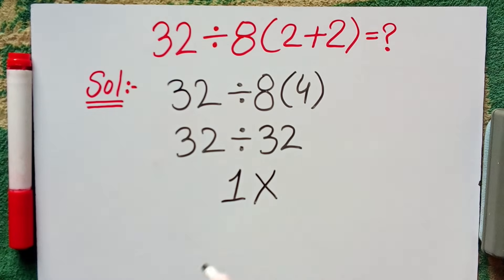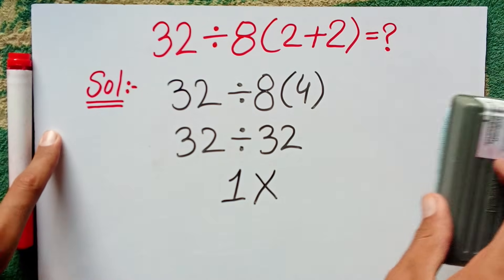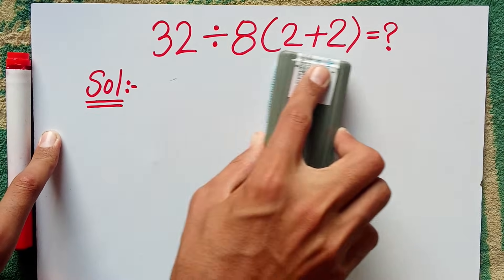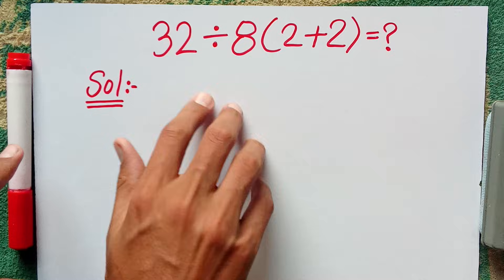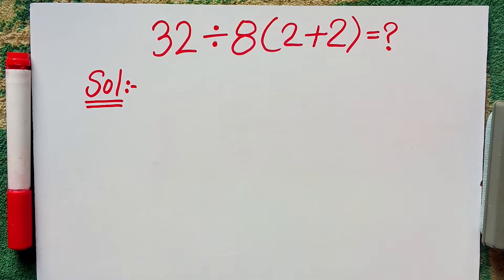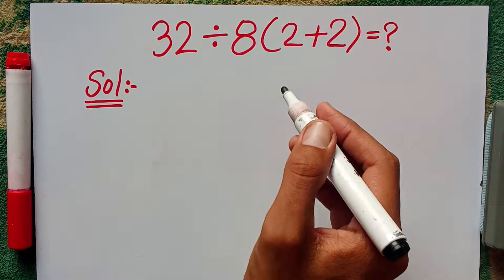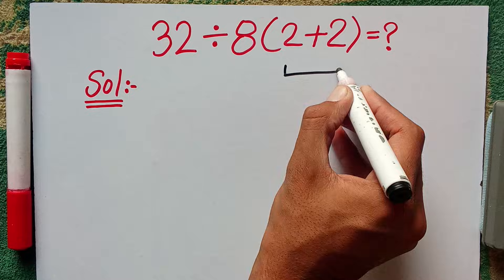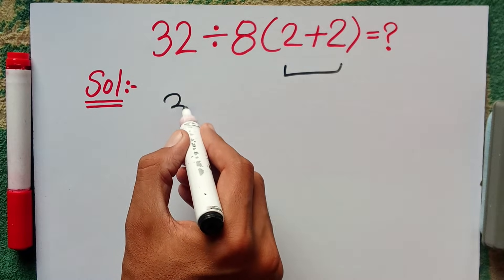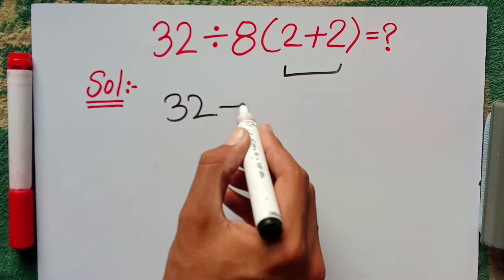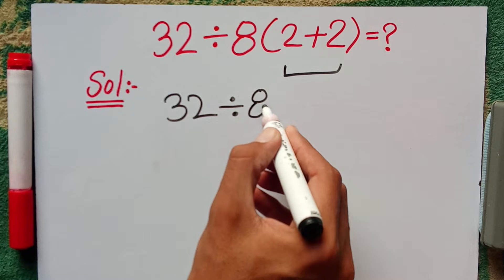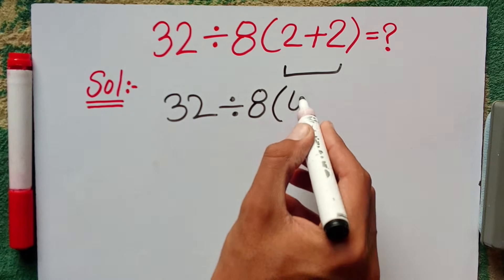But guys, this answer is wrong because the order of operation which is called PEMDAS rule says that whenever an expression has parenthesis, then firstly we can solve parenthesis. So I can rewrite 32 divided by 8, 2 plus 2 equals 4.